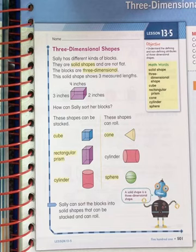How can Sally sort her blocks? These shapes can be stacked: cube, rectangular prism, and cylinder. These shapes can roll: cone, cylinder, and sphere.